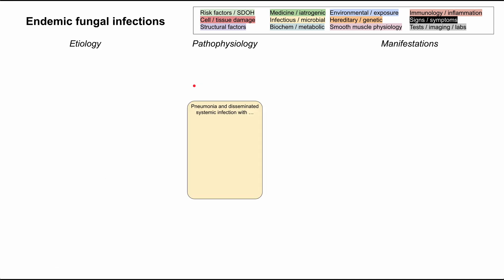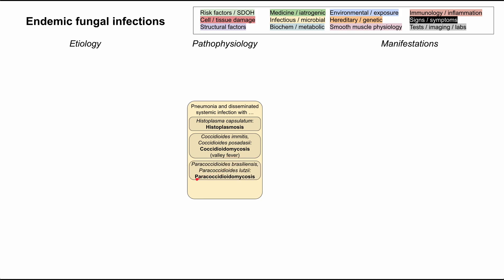These endemic fungal infections typically start as pneumonia and create a disseminated systemic infection. We'll be talking about four of them: histoplasmosis, caused by Histoplasma capsulatum; coccidiomycosis, caused by the genus Coccidioides, also known as valley fever; paracoccidiomycosis, caused by the genus Paracoccidioides; and blastomycosis, caused by Blastomyces dermatitidis.